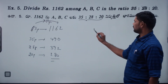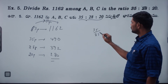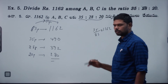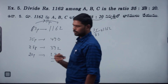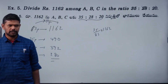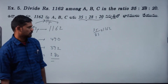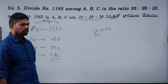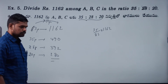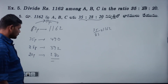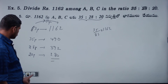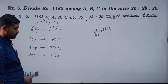35 by 83 into total 1162. So the answer for each share is computed by multiplying the respective ratio part by 1162 divided by 83.